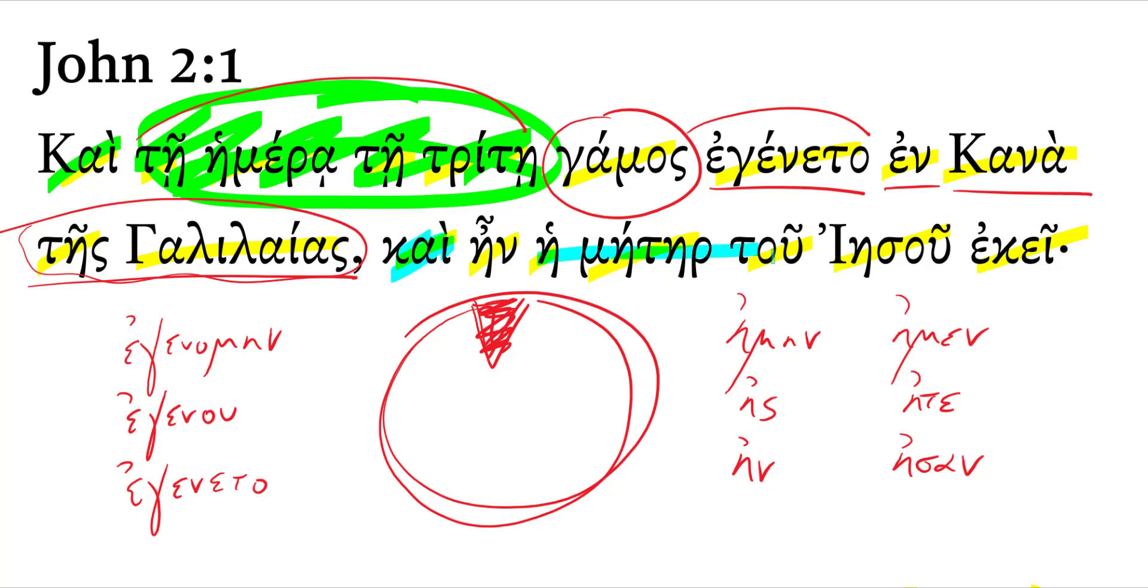And the mother of Jesus was there. Let's look at a couple of verbs here. I want to look at this verb, ain. And ain is just the imperfect of the verb eimi.